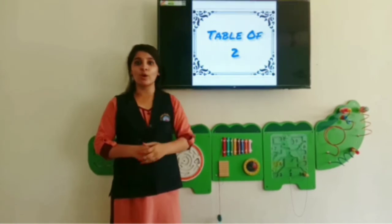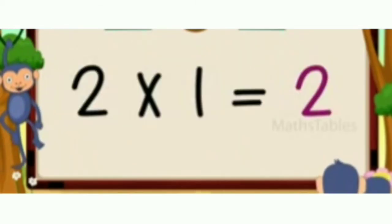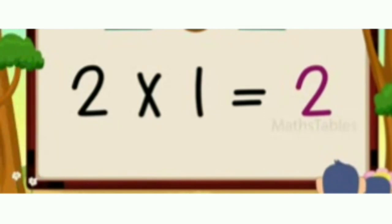So, shall we start? Two, one is two. Two twos are four. Two threes are six.